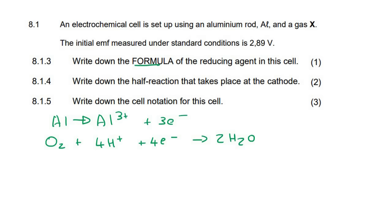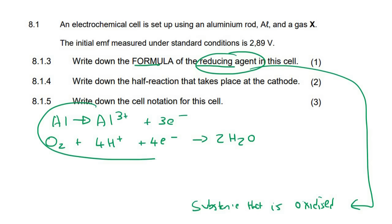Okay, so this question says write down the formula of the reducing agent. Now the reducing agent, if you remember, is the substance that is oxidized. Now if you look at these two reactions, we know that oxidation is this one over here, where you've got the electrons on the right hand side. Remember, if the electrons are on the right hand side, that's oxidation. If the electrons are on the left hand side, that is reduction. Let's write that down. If the electrons are on the right, that is oxidation. And then if the electrons on the left, that is reduction.